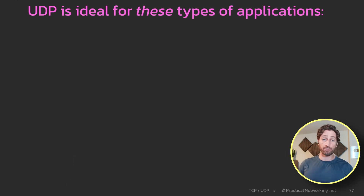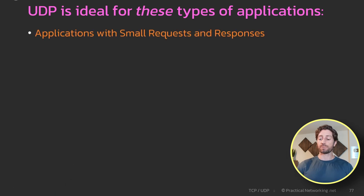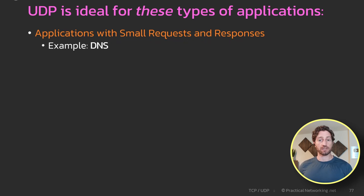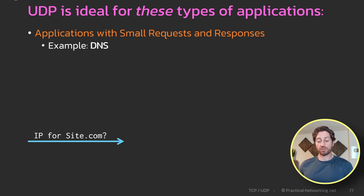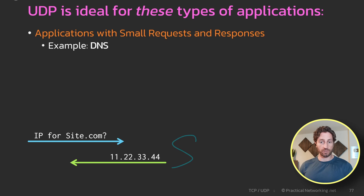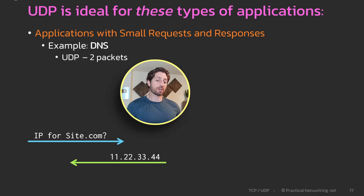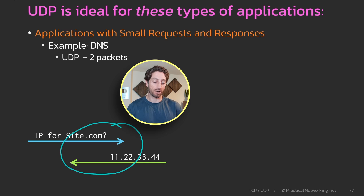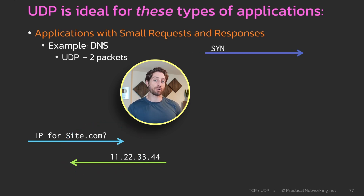The first type of application that is a better fit for UDP than TCP is applications that have small requests and small responses. A good example of this is DNS — the Domain Name System — a protocol used to resolve domain names to IP addresses. An example DNS conversation looks like this: the client asks for the IP address for a particular domain, in this case site.com, and the server provides that IP address. That's the entire conversation — only two packets.